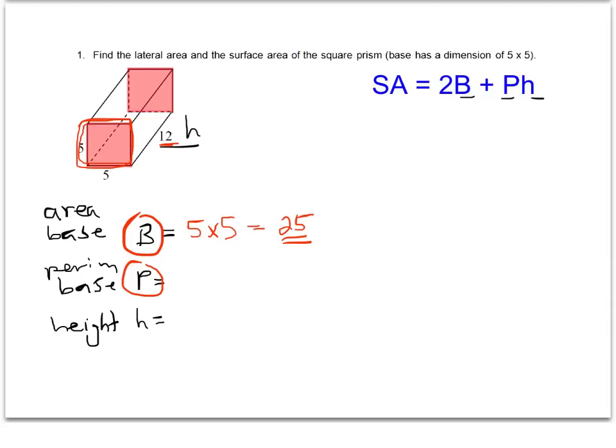The perimeter of the base, then, is the distance around the base. And if this is a square, each side has a value of 5. And so it's just going to be 4 times the value of 5, or 5 plus 5 plus 5 plus 5. The distance around the base is 20. And then the height we already pointed out is the value of 12.